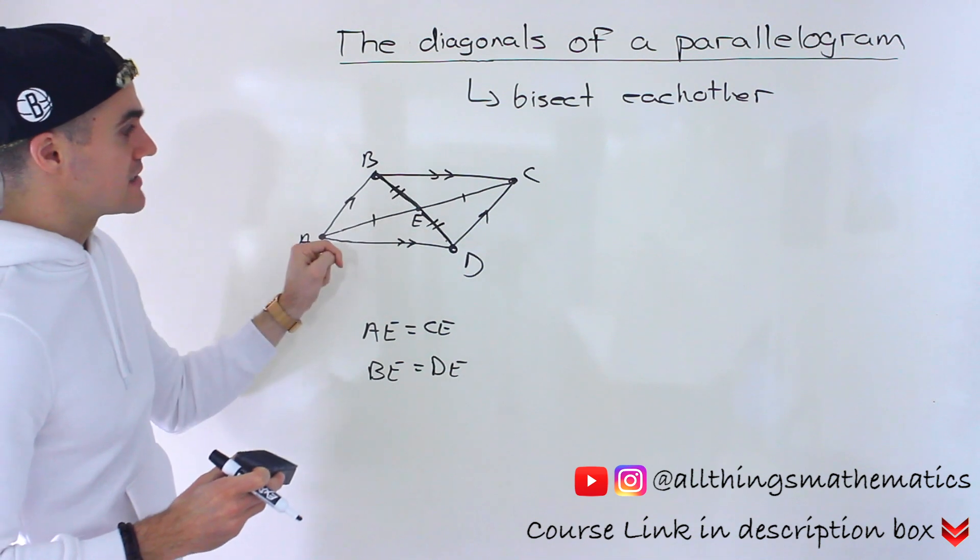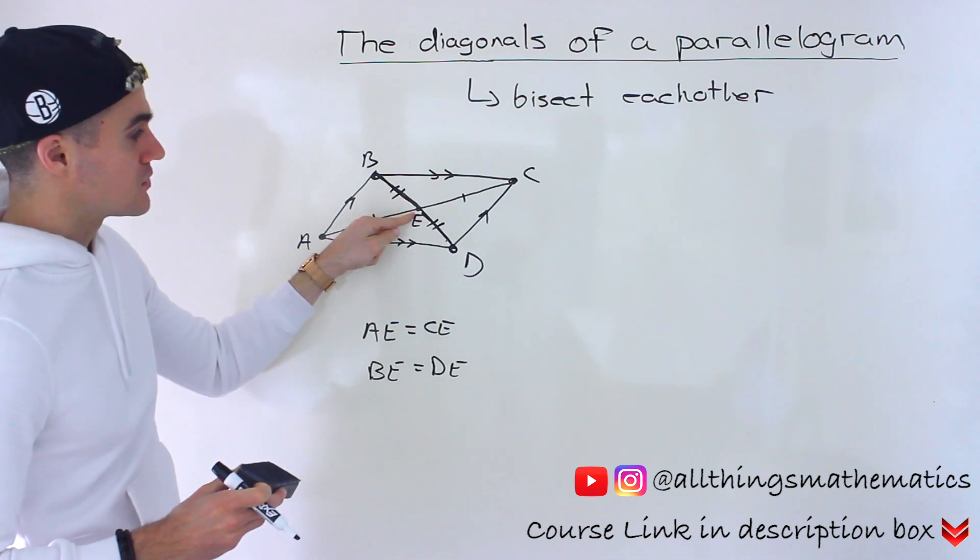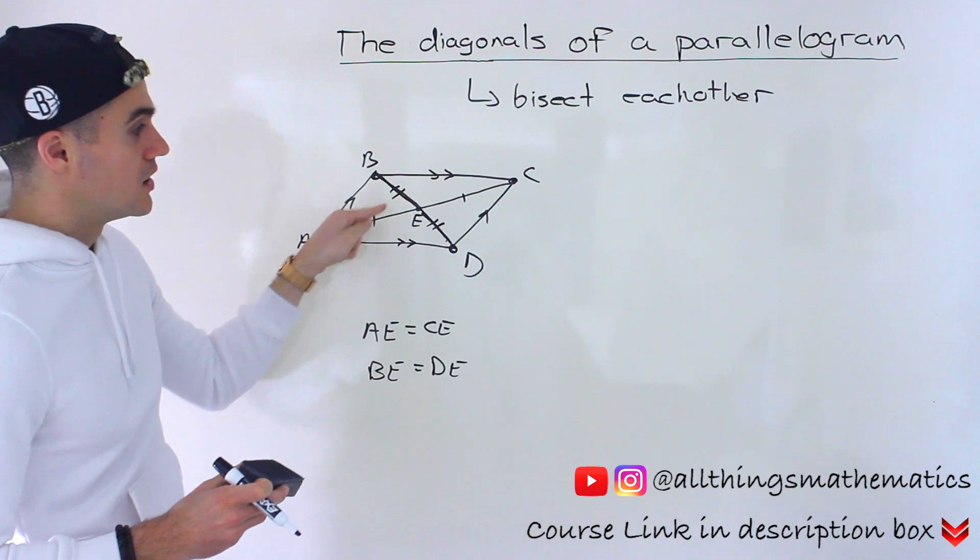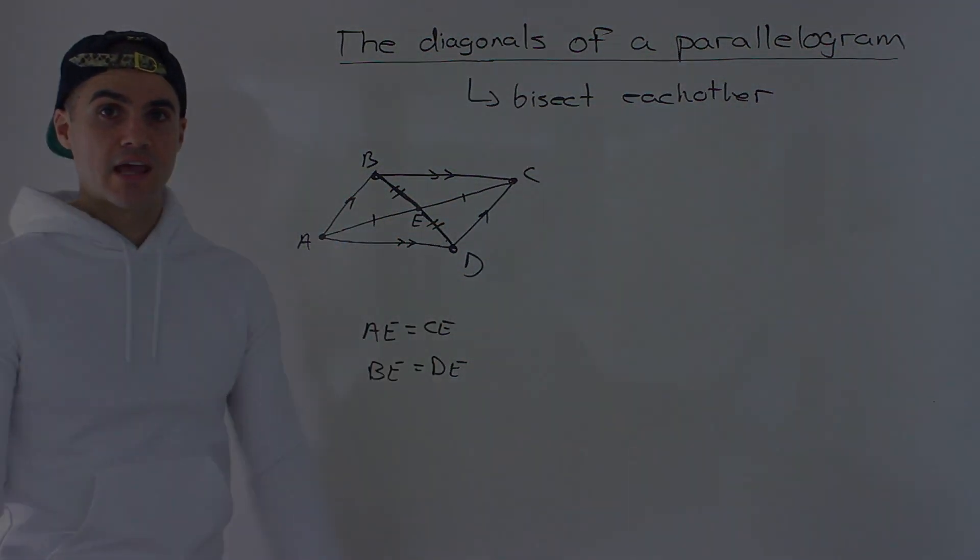The diagonals are always going to bisect each other, meaning that where they intersect, that point is going to cut both respective diagonals in half.